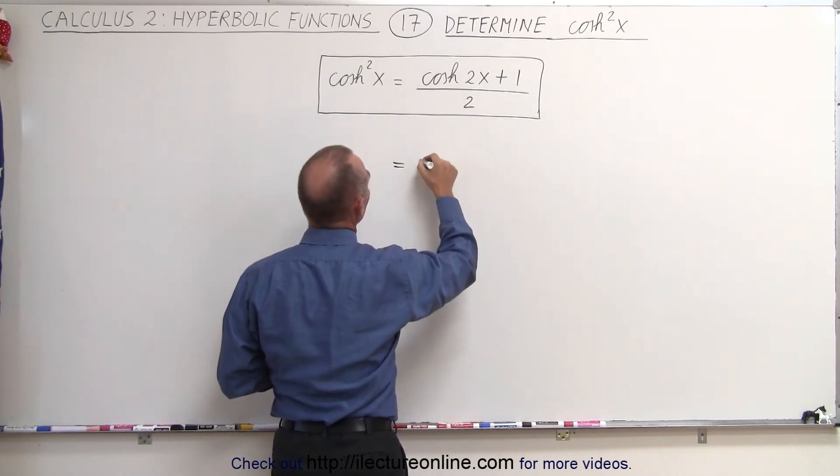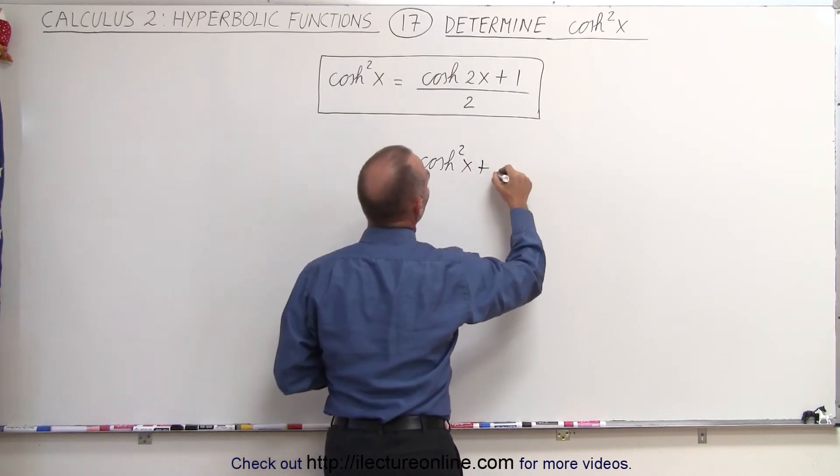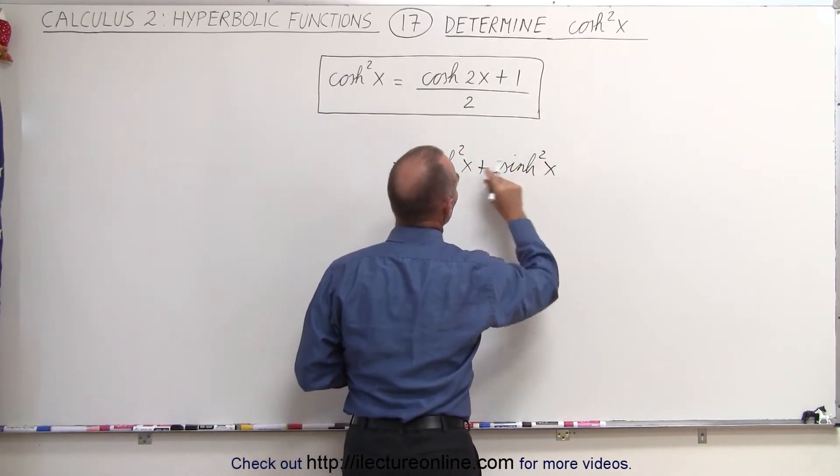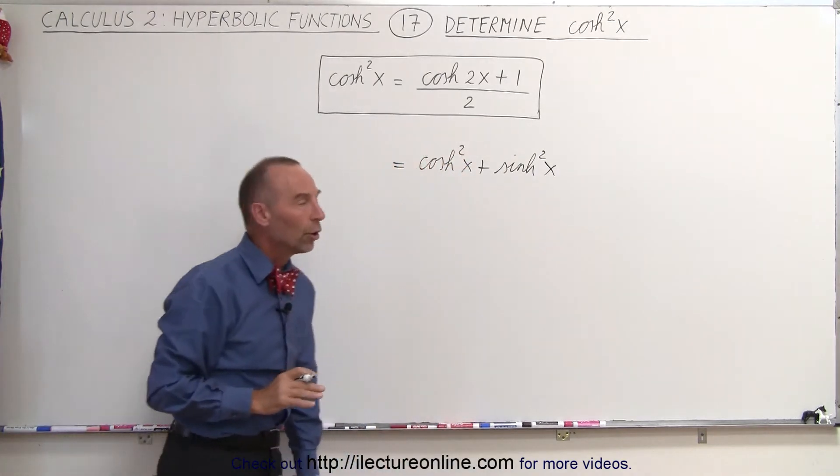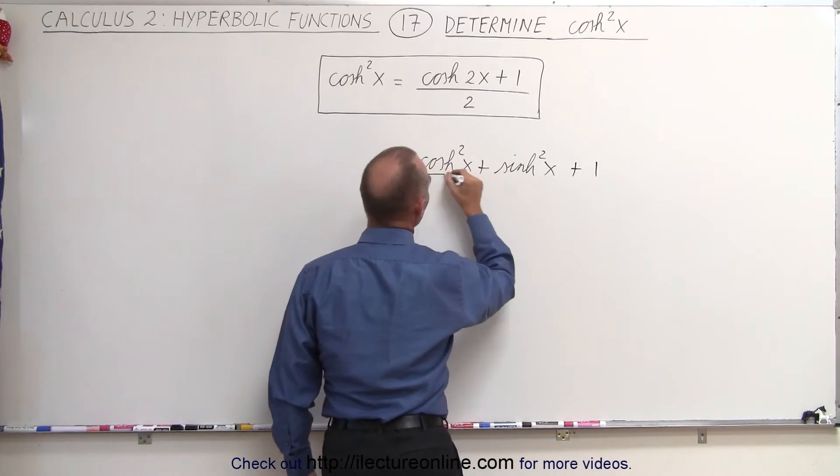This is equal to the hyperbolic cosine squared of x plus the hyperbolic sine squared of x. We showed that a few videos ago. We still have the plus 1, and then the whole thing divided by 2.